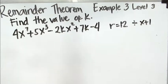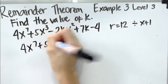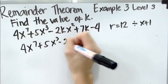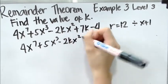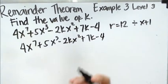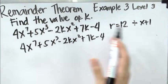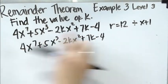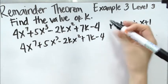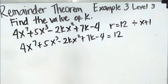First, we simply write the equation: 4x to the 7 plus 5x cubed minus 2kx squared plus 7k minus 4. And according to the given, if we divide the given polynomial by this one, we're going to have the remainder 12. That's why it equals 12.